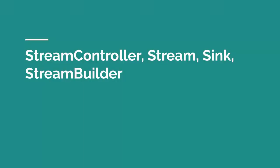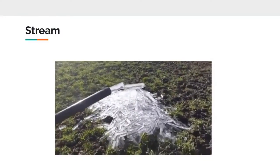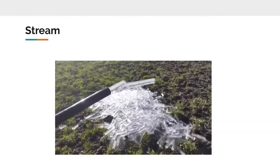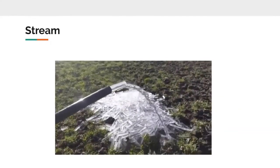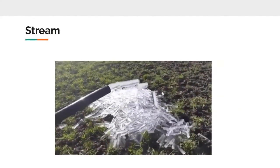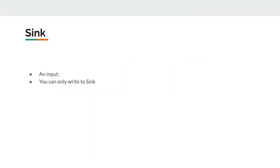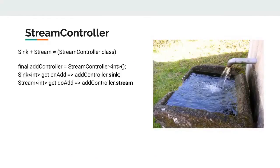To implement BLoC, we need to know terms such as stream controller, stream sink, and stream builder. A stream is a continuous flow of data. A stream has a single direction — you can only read from a stream and cannot write to it. A sink takes an input and you can only write to a sink; you cannot read from it. Streams and sinks come in pairs.